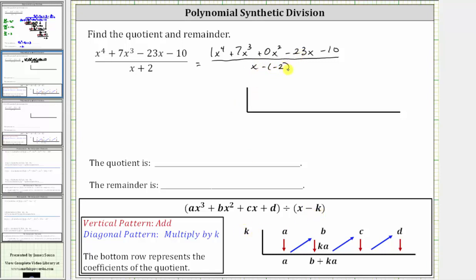So let's place the value of k outside the table, and I will list the coefficients inside the table, which are one, seven, zero, negative 23, and negative 10.